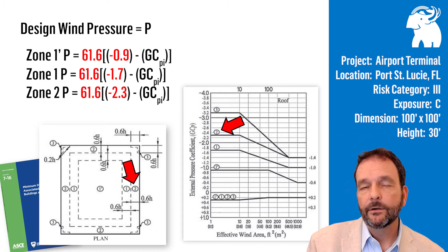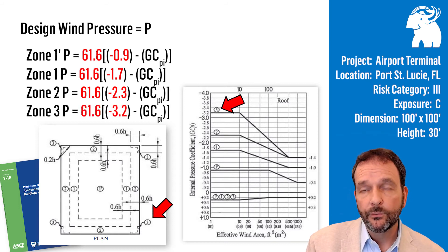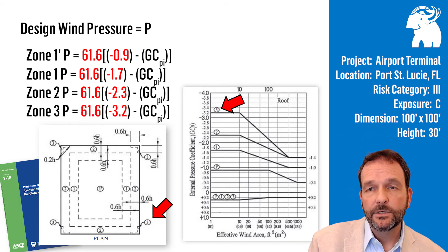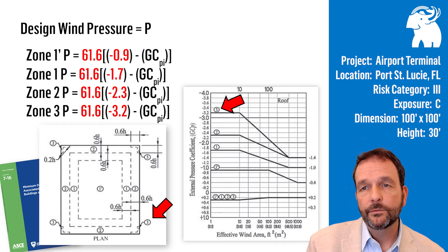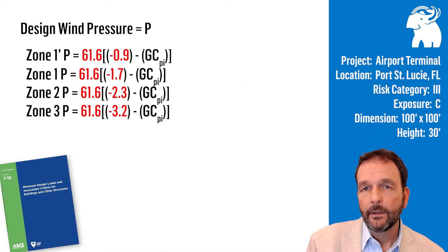Now finally, our zone 3, our corner zone. The external pressure coefficient is negative 3.2. And the dimensions of that zone are 0.6 times the height times 0.2 times the height, an L-shaped area. Now we have all four external pressure coefficients for our roof zones.